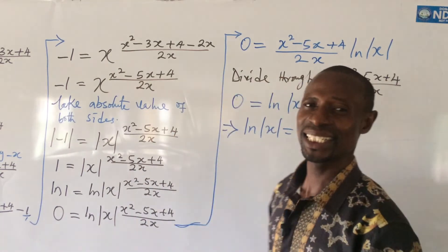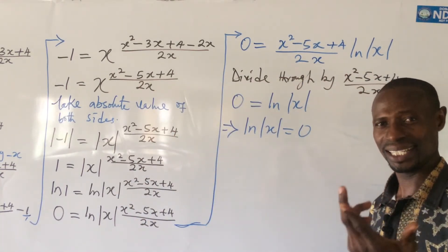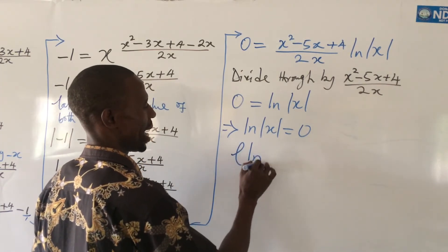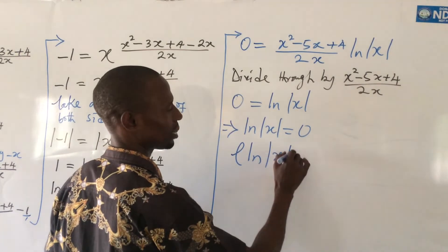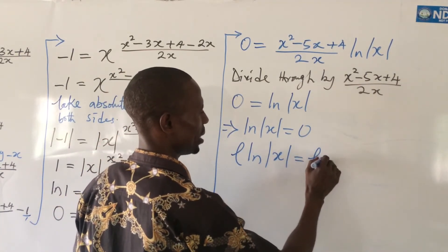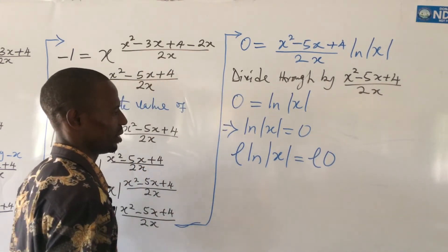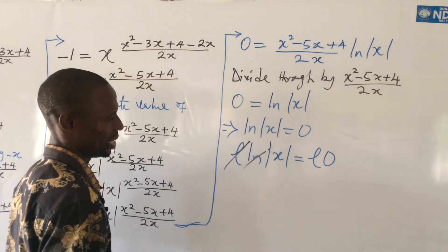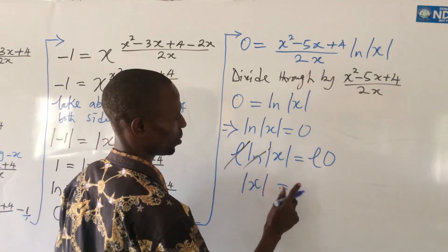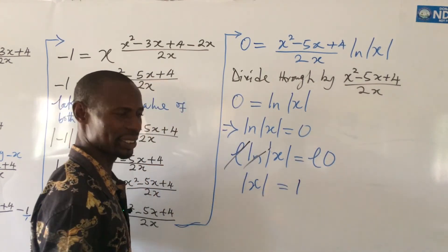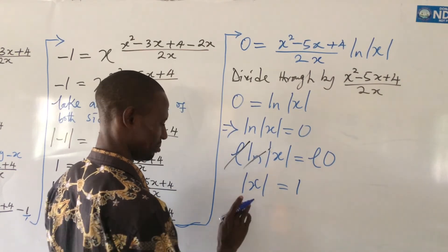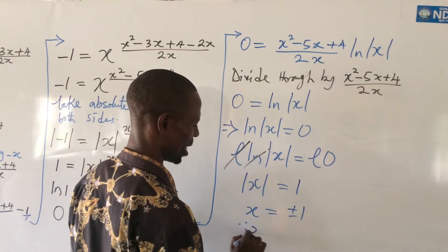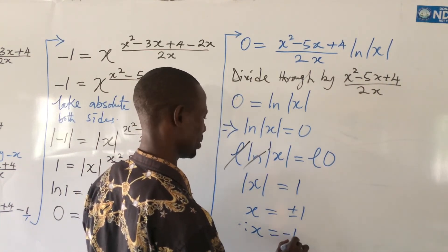From here again, we can use the special identity e to eliminate this ln. So raising e to both sides gives us e to the ln of the absolute value of x equal to e to the 0. The e will take care of the log, so we are left with the absolute value of x equal to e to the 0, which gives us 1. Therefore, the absolute value of x equals 1, which means x equals plus or minus 1.